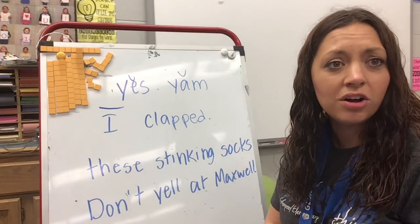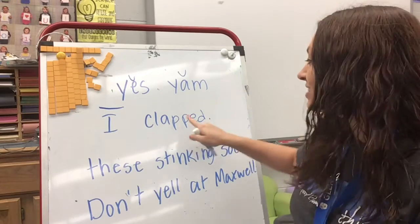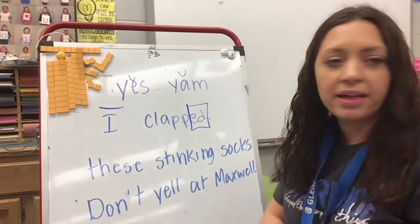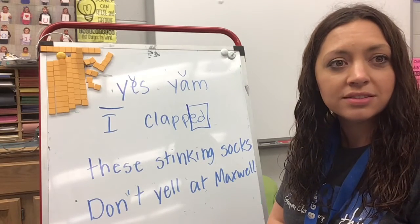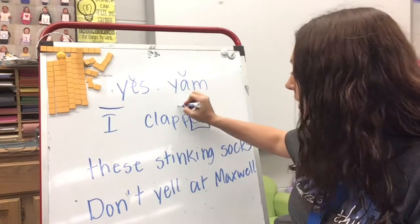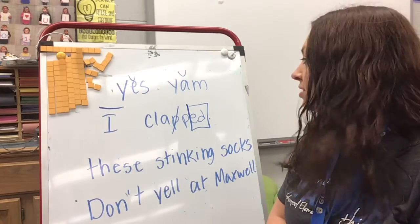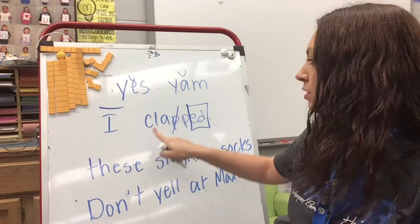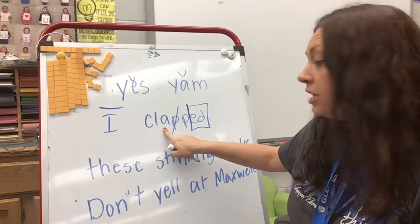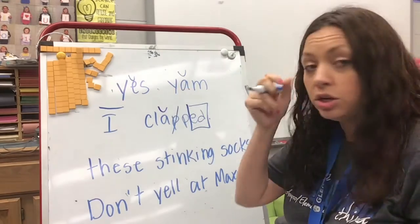Then this word's a little bit longer. What do you notice about it though? It's got that E-D suffix, so I need to block that off. It's got that double consonant, so I can cross one of them off. So I just say P. And A is my vowel — it's right in front of a consonant, so it's going to be short.